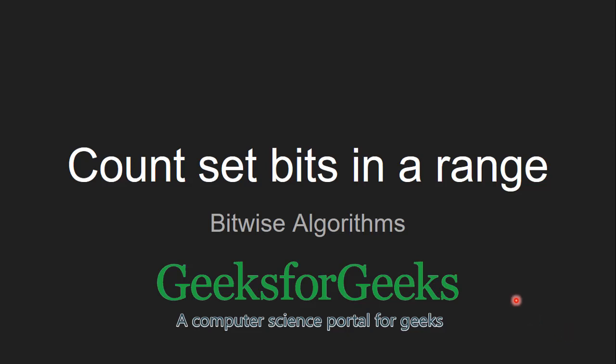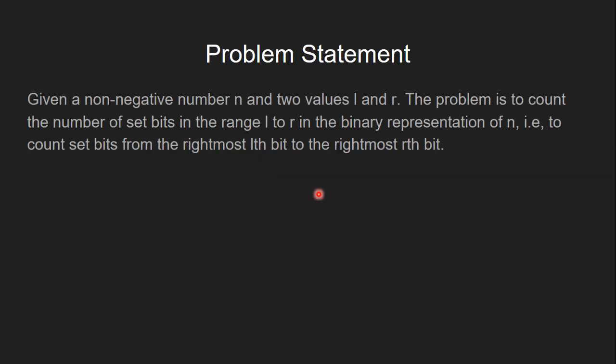Hello guys, welcome to GeeksforGeeks. Today we are going to see another problem: count set bits in a range. The problem statement is: given a non-negative number n and two values l and r, the problem is to count the number of set bits in the range l to r in the binary representation of n — that is, to count set bits from the rightmost l-th bit to the rightmost r-th bit.